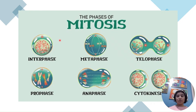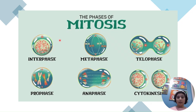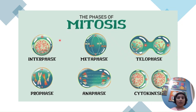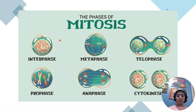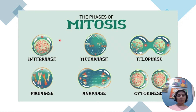Mitosis is for body growth, development, and repair — for example, healing a cut or growing taller. It's used in most body cells. Meiosis is special: it's used only for sperm and egg cells, formally called gametes, and is used for sexual reproduction. That's why there's so much genetic variety among the offspring of one pair of parents.